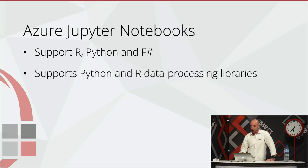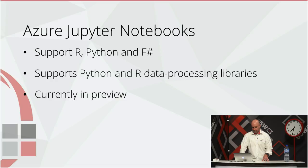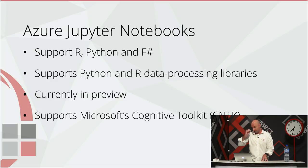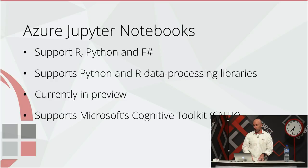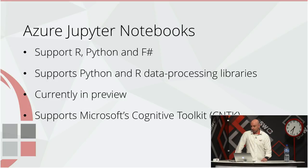There's rich support for Python and R data processing libraries. If a library isn't there, you can use the standard Python pip install syntax to bring in whatever library you need. The team is pretty responsive — put a question on their GitHub. Currently in preview, and one of the great benefits of the Azure implementation is it has Microsoft's Cognitive Toolkit (CNTK) available as one of your libraries, allowing you to take advantage of Cortana-style functionality.